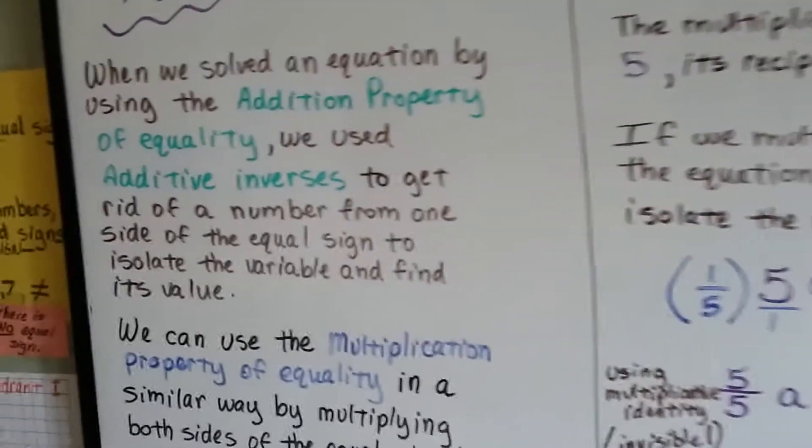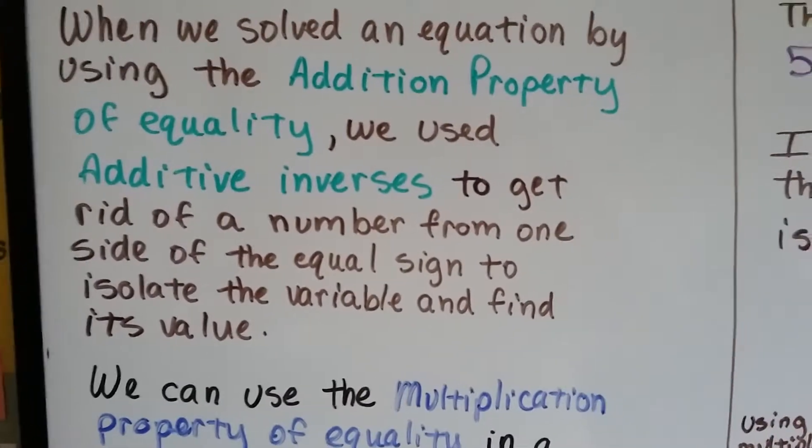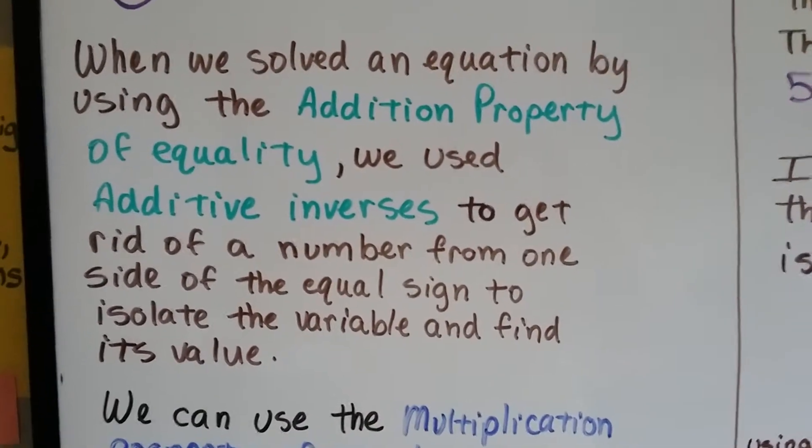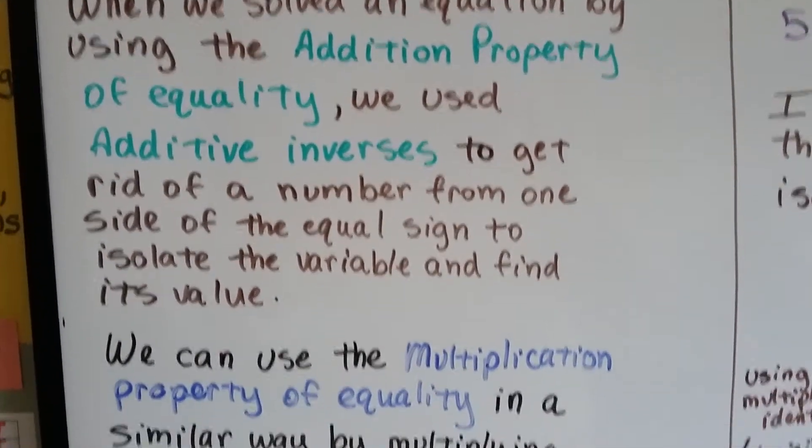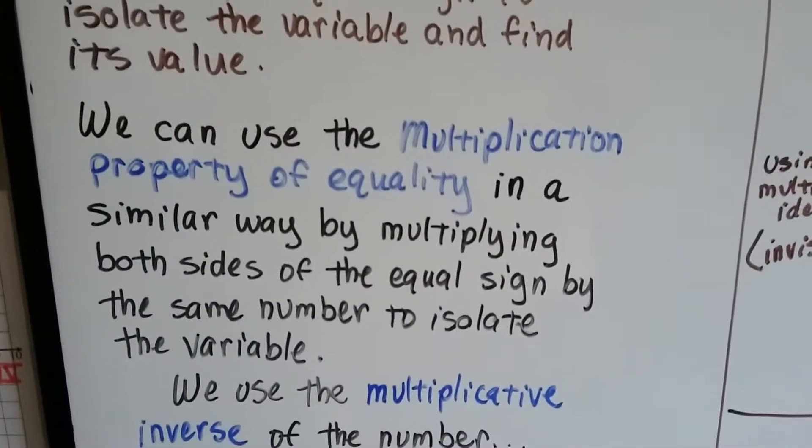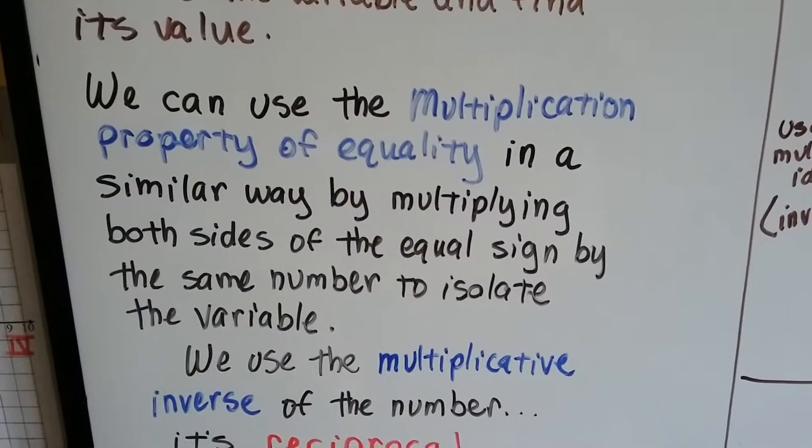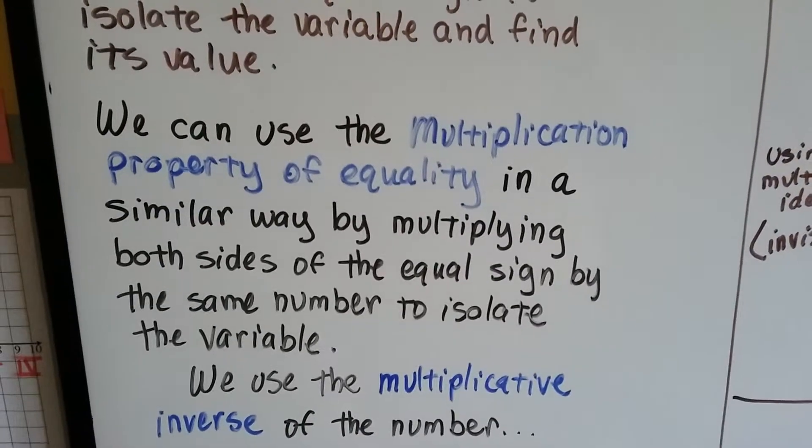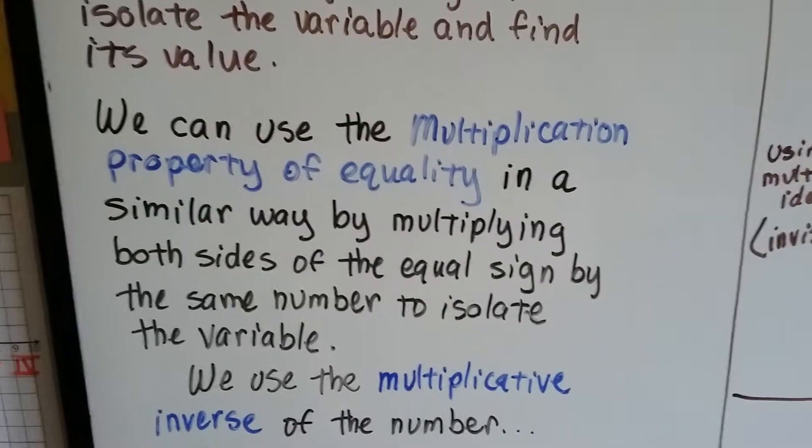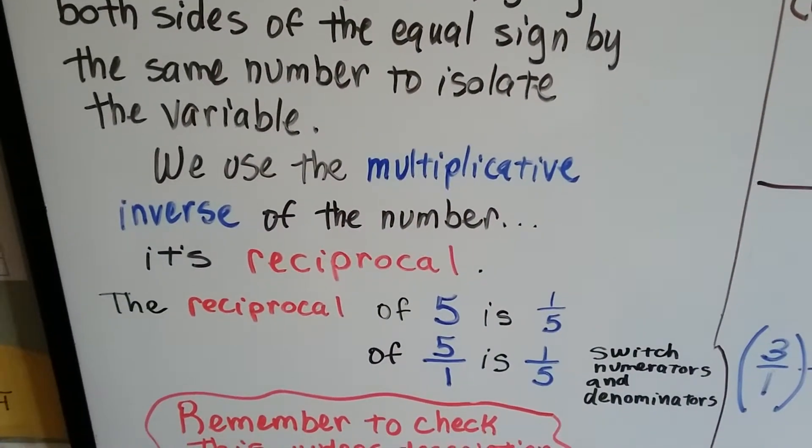When we solved an equation by using the addition property of equality, we used additive inverses to get rid of a number from one side of the equal sign to isolate the variable and find its value. We created zero pairs. When we use the multiplication property of equality in a similar way, by multiplying both sides of the equal sign by the same number to isolate the variable, but instead of creating a zero pair, we create a one. We use the multiplicative inverse of the number, its reciprocal.